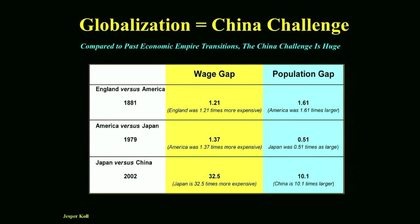We are in uncharted territory. We have a global world, and this is fantastic, but look at the economics. There have been transitions of empire in the past. In 1881, America surpassed England in productive capacity and became the factory of the world — the wage gap was 1.2. The next transition was in 1979, when Japan became the factory of the world — the wage gap was 1.4. And just eight years ago, China became the factory of the world, but the wage gap here is 30 times.